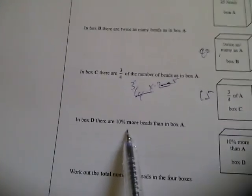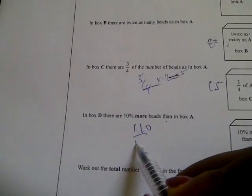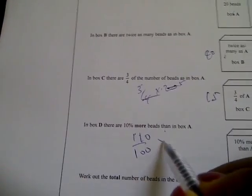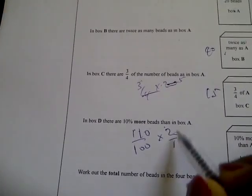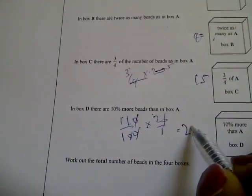In box D there are 10% more beads than in box A. That's 110 over 100 times 20 over 1, just cancel, so that'll be 22.